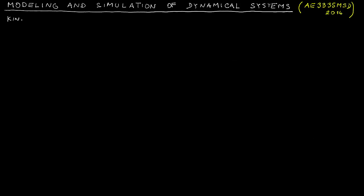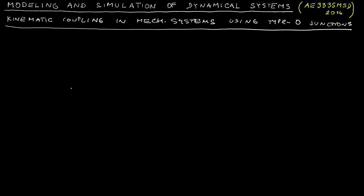Hi, welcome to modeling and simulation of dynamical systems. In this video I would like to show you how we can use type 0 junction in order to encode a kinematic coupling in mechanical systems.